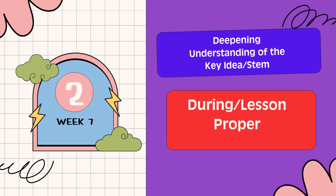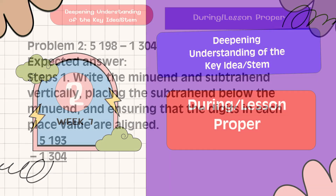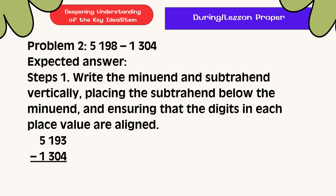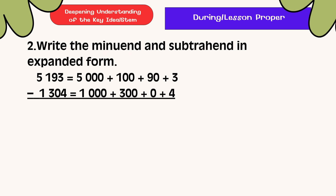Deepening Understanding of the Key Ideas. Problem 2: 5,198 minus 1,304. Step 1: Write the minuend and subtrahend vertically, placing the subtrahend below the minuend and ensuring that the digits in each place value are aligned. Step 2: Write the minuend and subtrahend in expanded form. 5,193 is expanded as 5,000 plus 100 plus 90 plus 3. Minus 1,304 expanded as 1,000 plus 300 plus 0 plus 4.